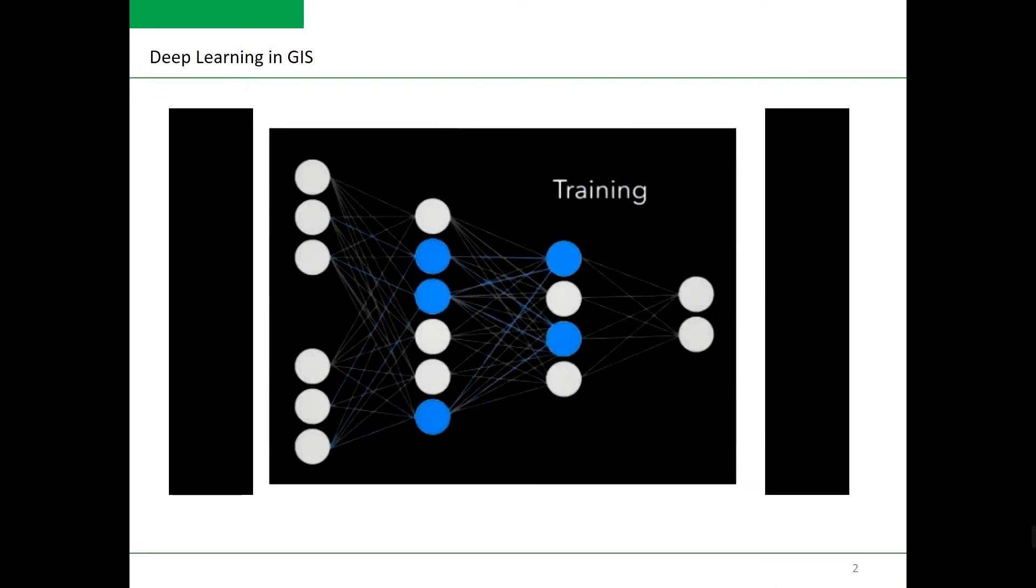Deep learning is a type of machine learning that relies on multiple layers of non-linear processing for feature identification and pattern recognition described in a model. Deep learning models can be integrated with ArcGIS Pro for object detection, object classification and image classification.